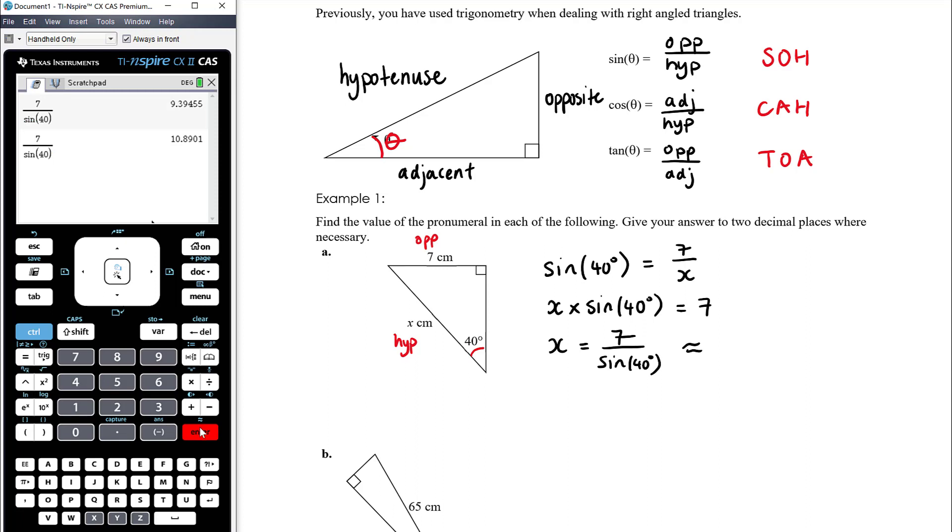So 10 point... Now the accuracy, two decimal places. 10.89. And the units here are centimeters.